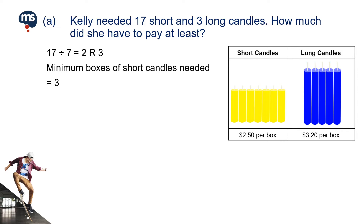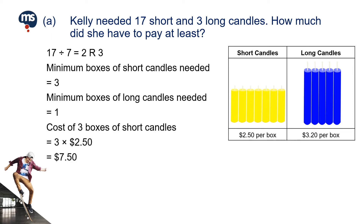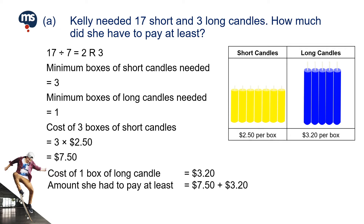The minimum boxes of long candles needed is 1. The cost of 3 boxes of short candles is 3 multiplied by $2.50, which is $7.50. Therefore, the least she had to pay for 17 short and 3 long candles is the sum of $7.50 and $3.20. The answer is $10.70.